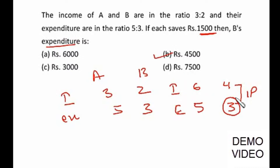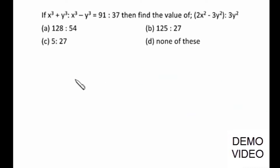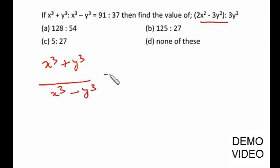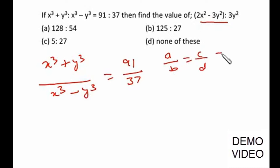Now let's see this problem. If (X³ + Y³) / (X³ − Y³) = 91/37, then we have to find out the value of a given expression. We have discussed a property of componendo and dividendo — if A/B = C/D, then...